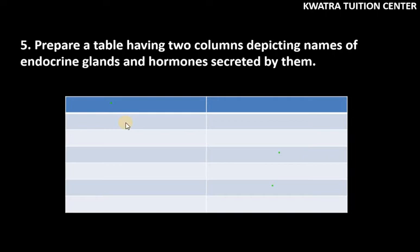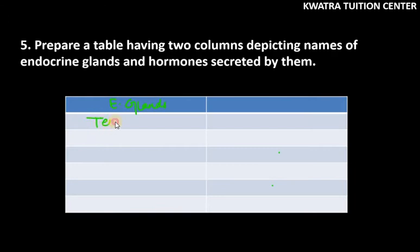Let's start with question number five. It says: prepare a table having two columns depicting names of endocrine glands and hormones secreted by them. In the first column we will be taking endocrine glands. The first one I am taking is testes, and testes we know secrete testosterone.